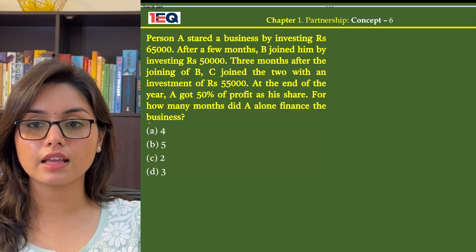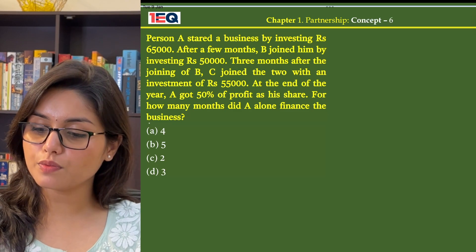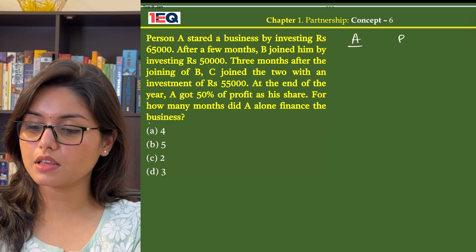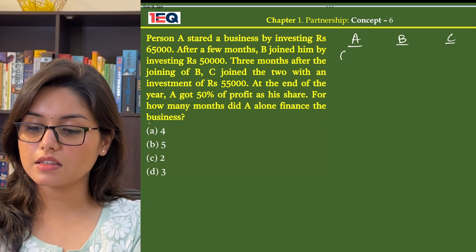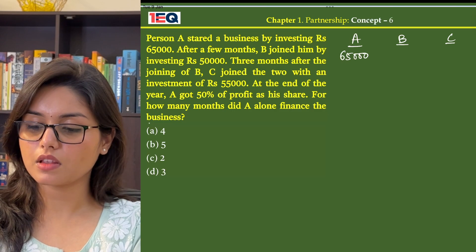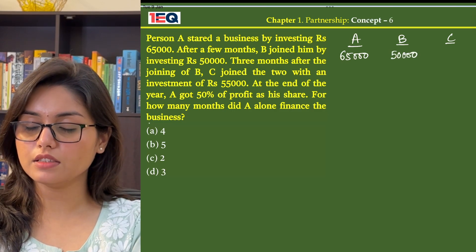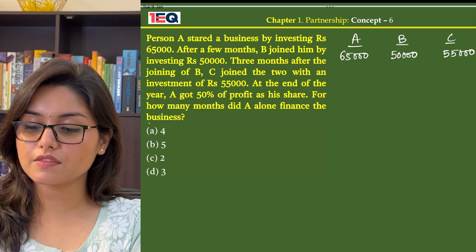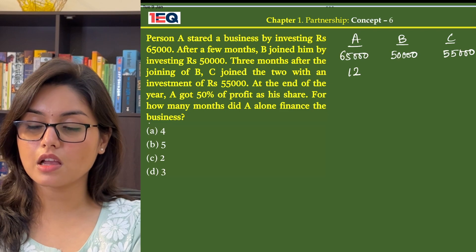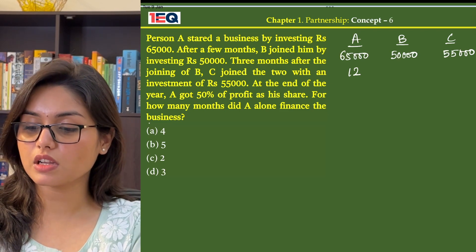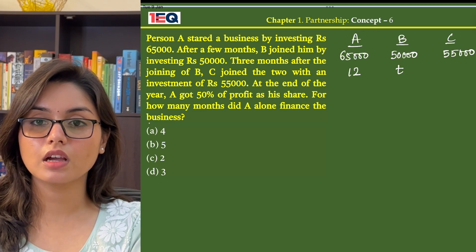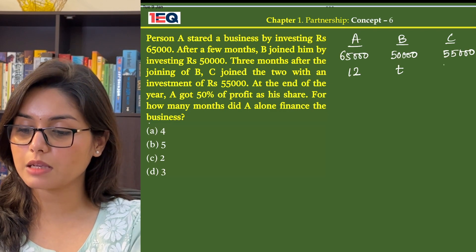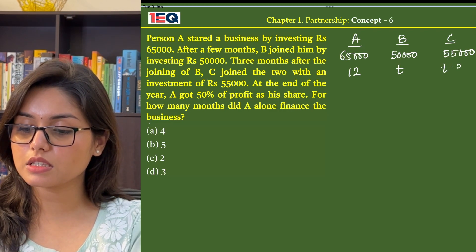For how many months did A alone finance the business? We know A, B and C have invested Rs 65,000, Rs 50,000 and Rs 55,000 respectively. A has invested for 12 months. We don't know the time period of B, so we will assume it to be T. C has joined 3 months after the joining of B, so the time of C will be T minus 3.